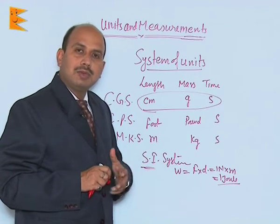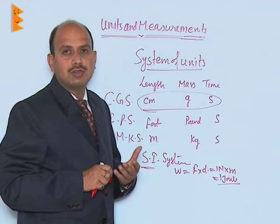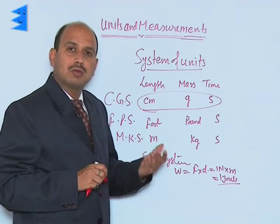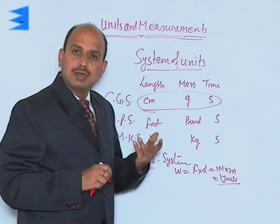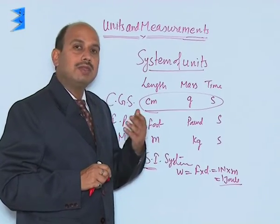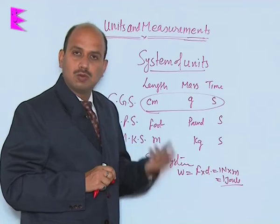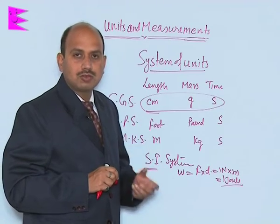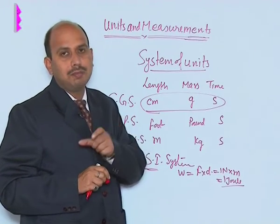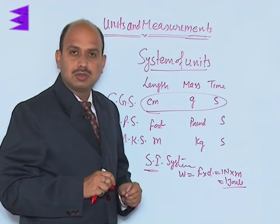Like if you are measuring speed, the MKS unit is meter per second, so its SI unit is also meter per second. If you are measuring current, current can be measured as i equals q upon t — that is 1 coulomb upon 1 second — which is equal to 1 ampere. Ampere is the SI unit of current.